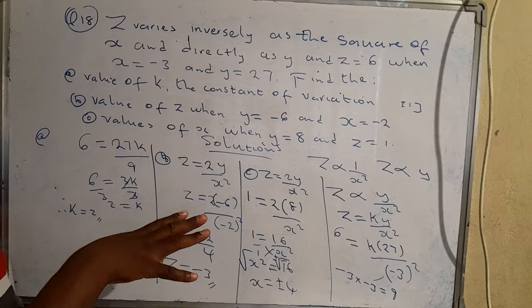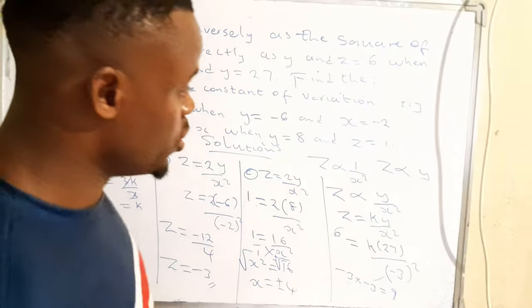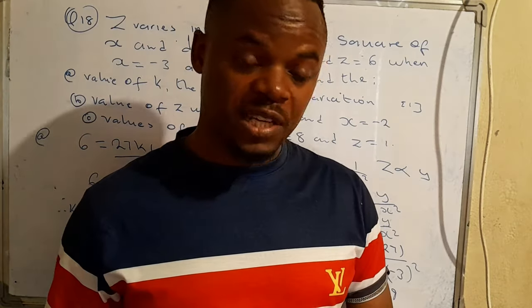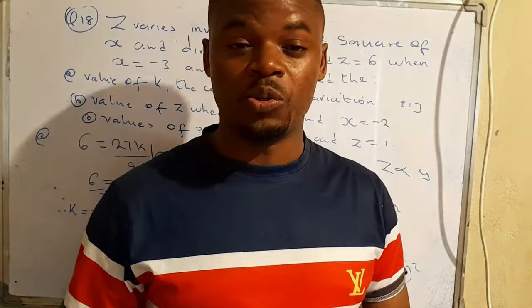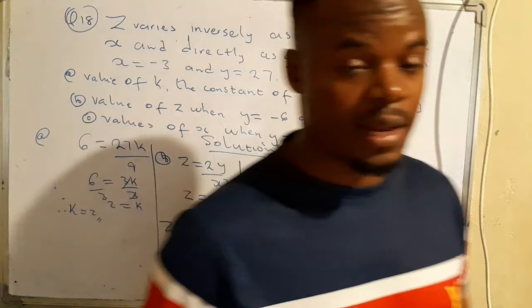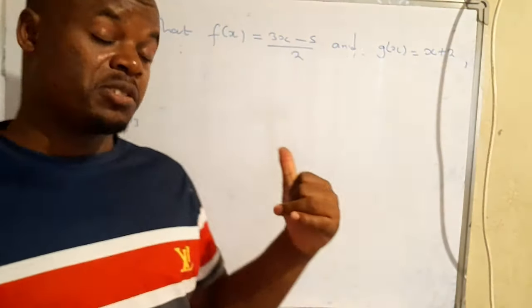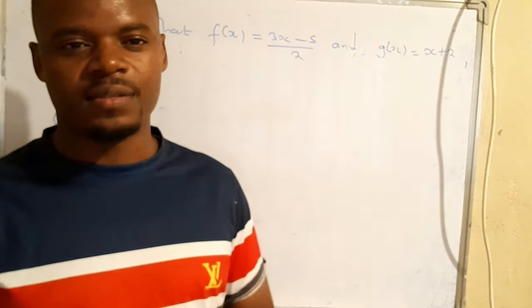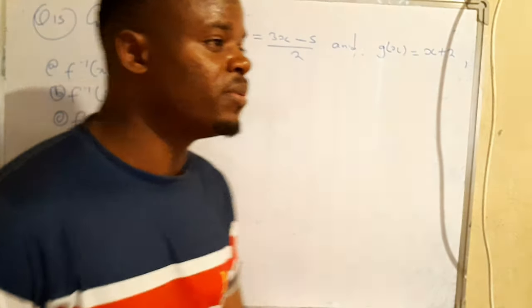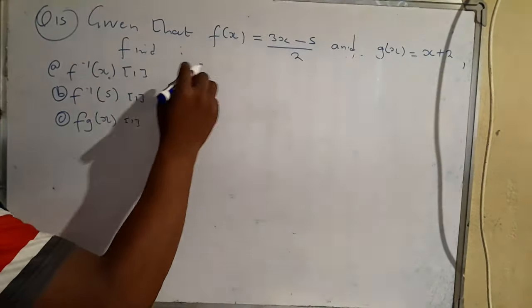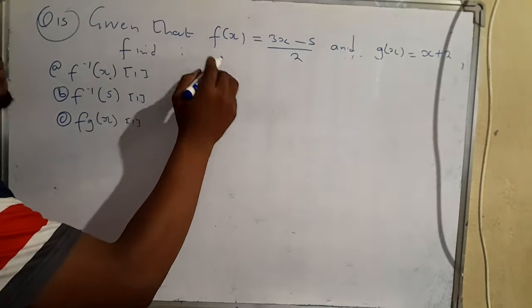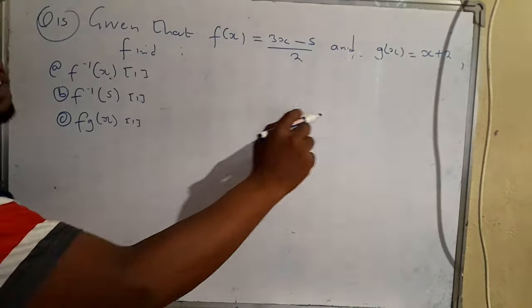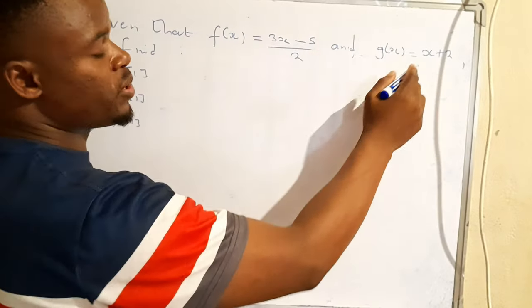That's how you solve variation problems. Now let me bring in Question 15, which has to do with composite functions and inverse functions. Given that f(x) = (3x − 5)/2 and g(x) = x + 2, let's see how to solve this.